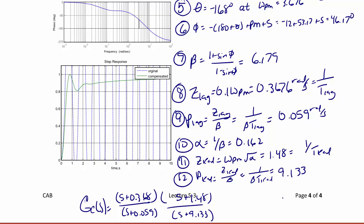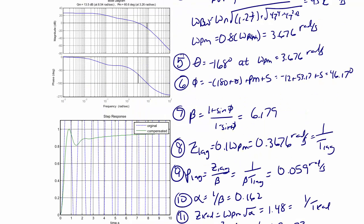Let's examine the compensated Bode diagram and the step response before and after compensation. We can see the effects of the lag and lead compensator, and most importantly, we now have a new phase margin of 60.6 degrees at 3.26 radians per second, which is close to our target gain crossover frequency of 3.676 radians per second. The step response shows the original system was unstable, while the compensated system is now stable and follows a step input.